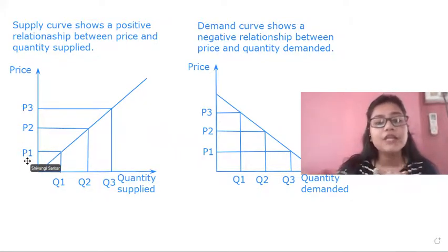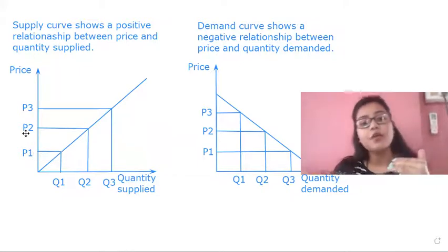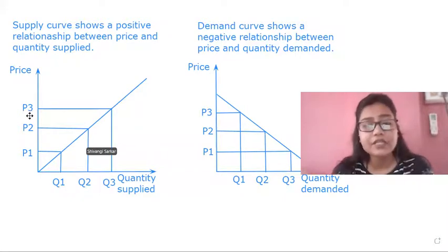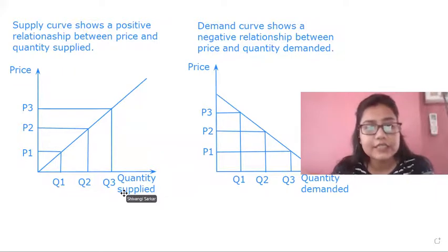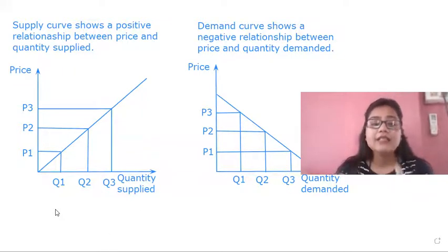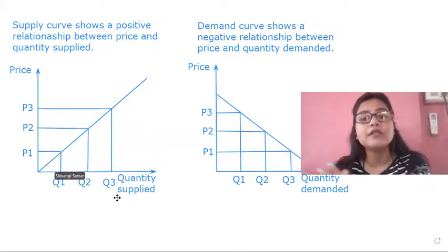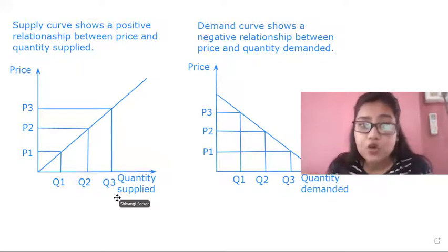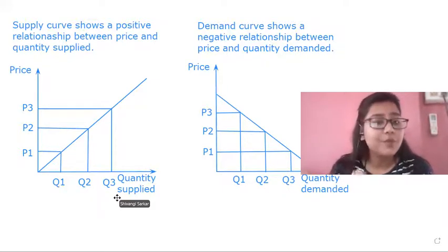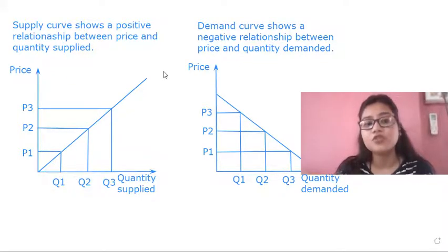Here we see in the graph, if the price of the product is at P1, the quantity supplied is Q1. Similarly, if the price increases from P1 to P2, the quantity has also increased from Q1 to Q2. Further, if the price increases from P2 to P3, the quantity supplied also increases. So the supply condition shows that as the price of the product increases, the quantity supplied will also increase. What does the law of supply say? If the price of a commodity increases, the quantity supplied of that commodity will also increase given that other factors remain constant. Hence the supply curve shows a positive relationship between price and quantity supplied, giving us an upward sloping supply curve.